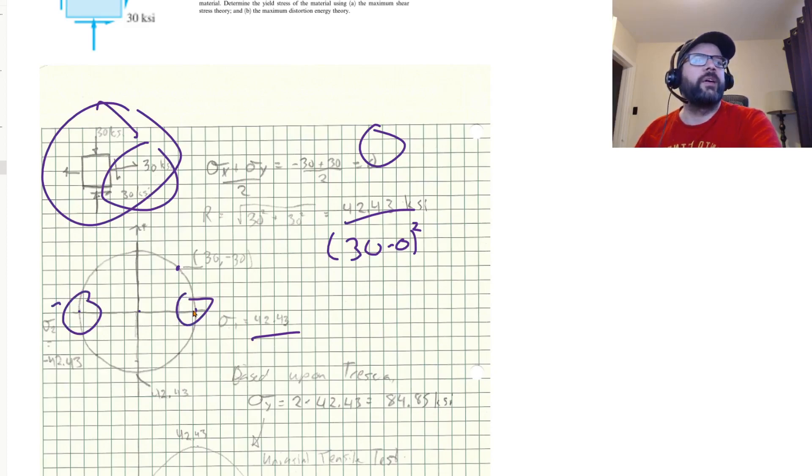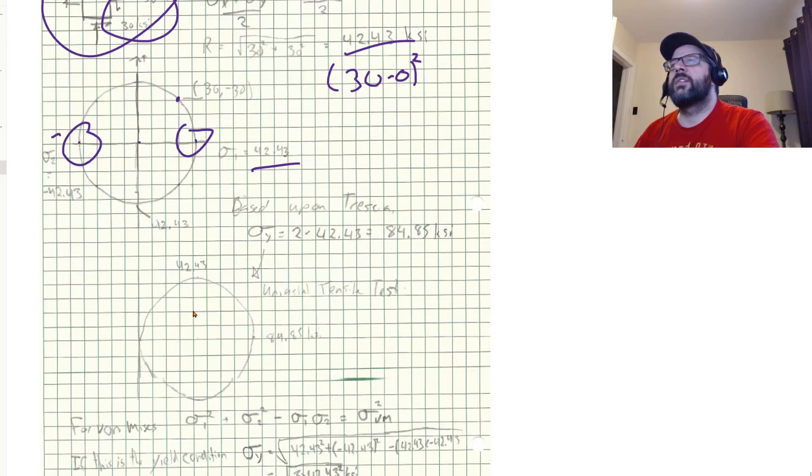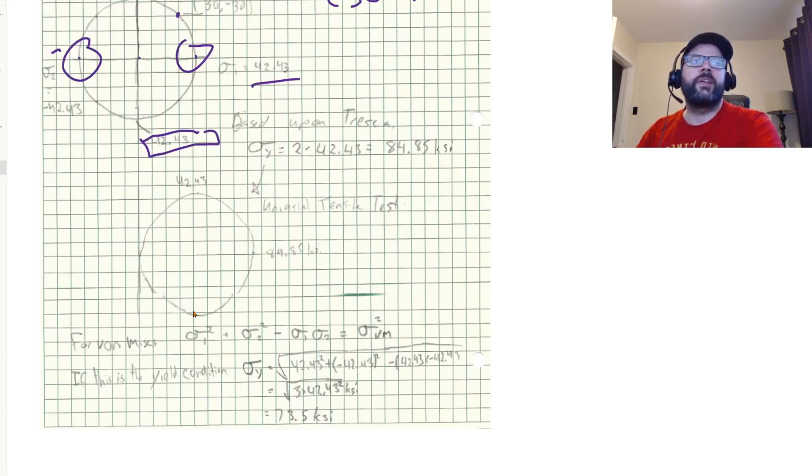So based upon Tresca, our yield strength is just going to be twice the maximum shear. So twice our 42.43 KSI. Again, here's kind of a Mohr's circle for a uniaxial tensile test.